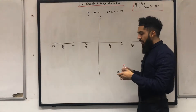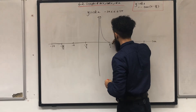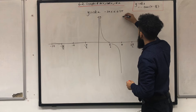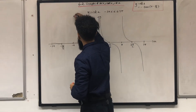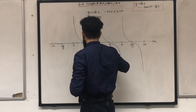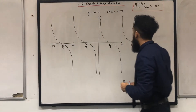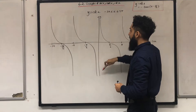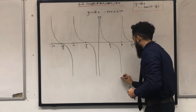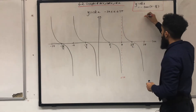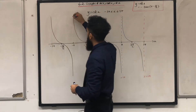So the graph of y = cot x will look something like this. We've got asymptotes at the y-axis, which is x = 0. The other asymptotes are at x = π, x = 2π, and in the same way, x = -π.